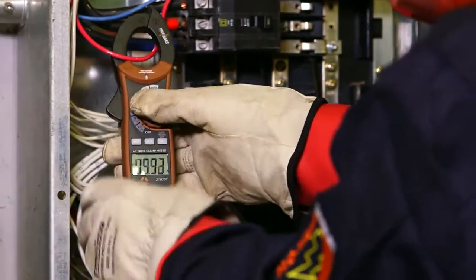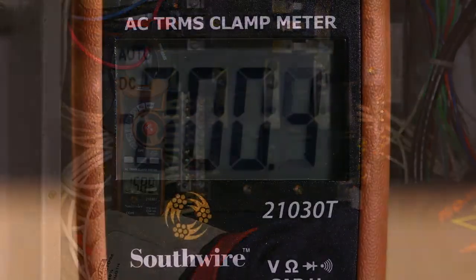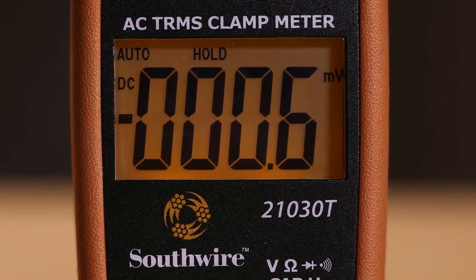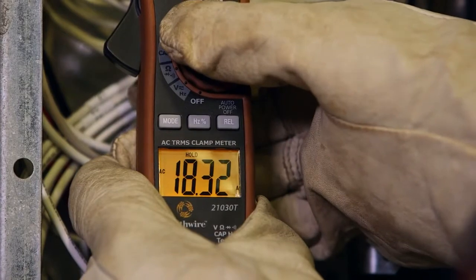To measure AC current up to 400 Amps, simply clamp over the wire being tested. Readings are shown on an easy-to-read digital display. A backlight illuminates the display when working in dimly lit areas.